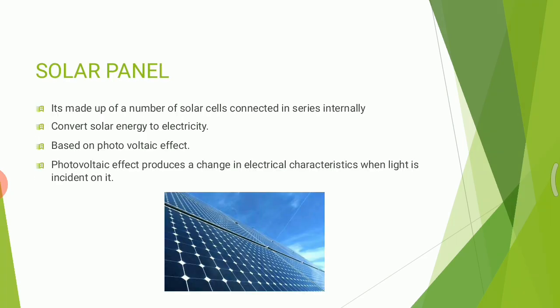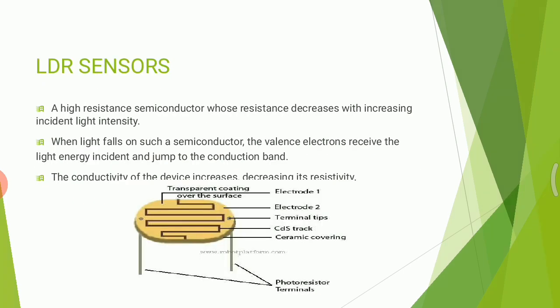Solar panels are made up of a number of solar cells connected in series, which convert solar energy to electricity based on the photovoltaic effect. The photovoltaic effect produces a change in electrical resistance when light is incident on it.